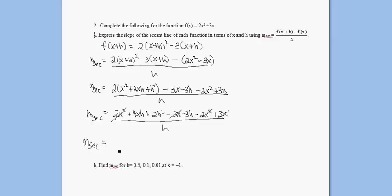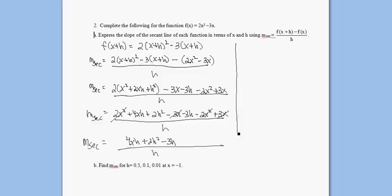Let's rewrite my numerator: 4xh plus 2h squared minus 3h, all over h. I'm going to divide all three of these by h — I have to divide all three or it's illegal. The h goes away, the h goes away, the h goes away. So the slope of our secant is 4x plus 2h minus 3.